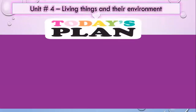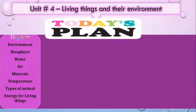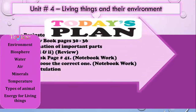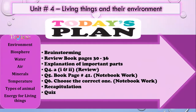The lesson plan is to review Unit Number Four: Living Things and Their Environment. Our topics are environment, biosphere, water, air, minerals, temperature, types of animals, and energy for living things. First we will do the brainstorming from Unit Number Three, then review book pages 30 through 36. I will explain some important parts of the lesson, then we'll review question number four.